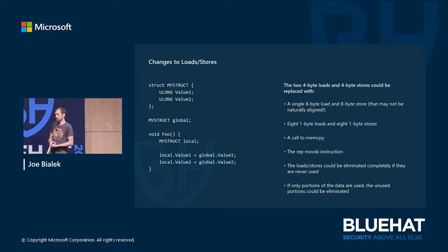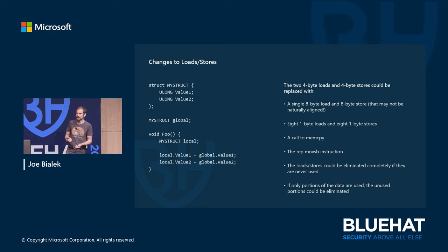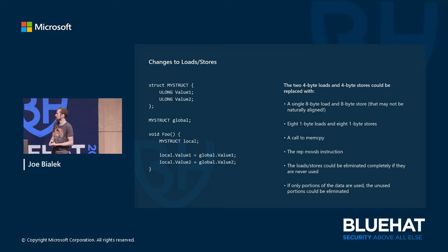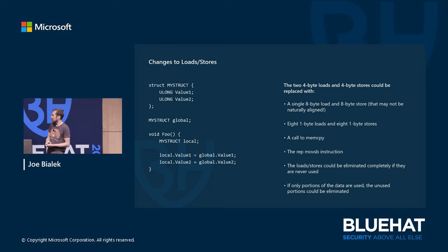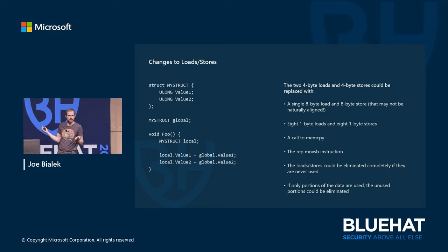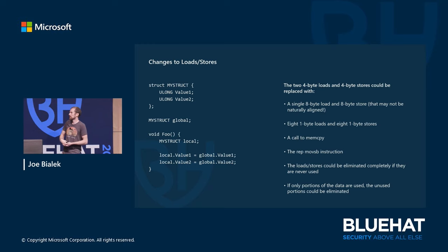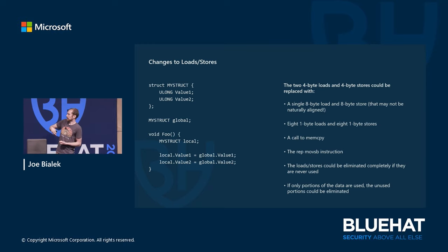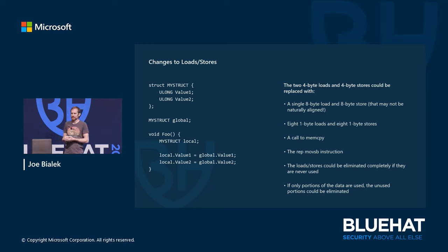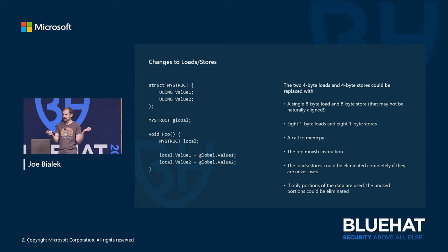The compiler could lower this to the rep movsb instruction, which effectively does memcopy, with implementation-defined memory access size. Furthermore, if the local variable is never used, the compiler would probably completely optimize away those loads and stores, since nobody consumes the result. And if only part of a field is referenced — say one byte of a four-byte field — the compiler can shrink those loads and stores down to only copy the bytes you actually reference.